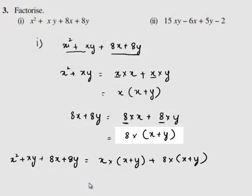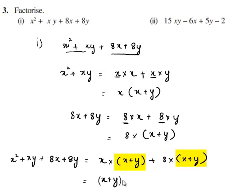Here we have x plus y as a common factor in both terms. Using the distributive law we bring out the term x plus y and are left with x in the first term and 8 in the second term.